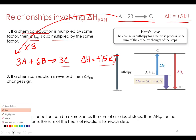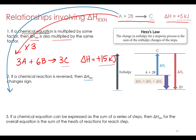If we reverse a reaction, all we have to do is change the sign of delta H, because we're flipping our final and initial potential energies. So if we flip the equation so that instead of A plus 2B goes to C, it becomes C goes to A plus 2B, the enthalpy changes from plus 5 kilojoules to negative 5 kilojoules.